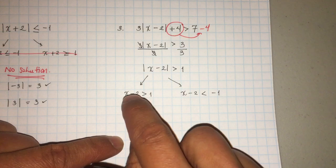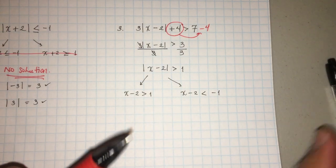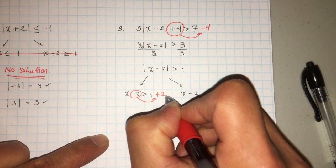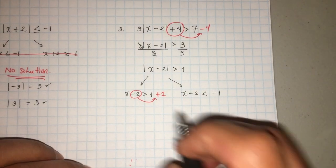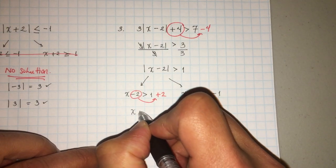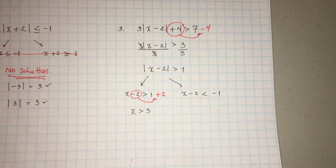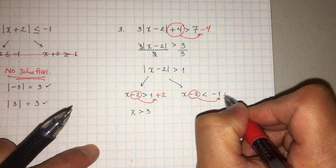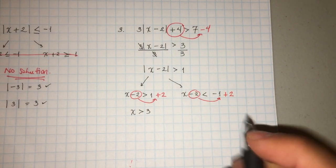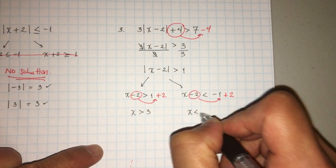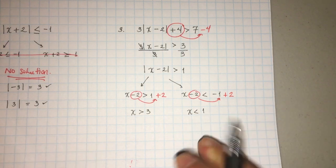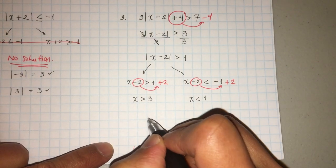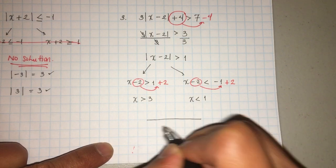So let's go ahead and solve this one. Negative 2 becomes a positive 2, and that becomes easy — 1 plus 2 is 3. Igualmente el otro: menos 2 acá se convierte en positivo 2. So we have x is less than — negative 1 plus 2 is 1. So now you have those two solutions. Remember, you have to do the number line.